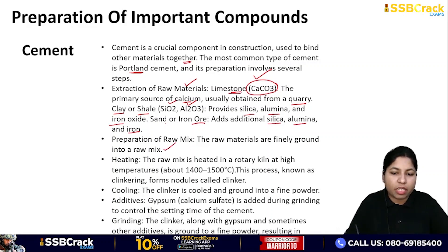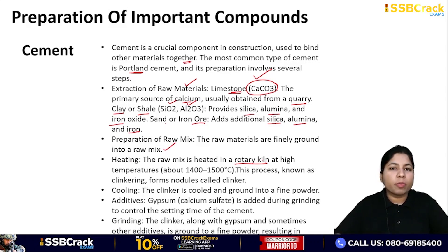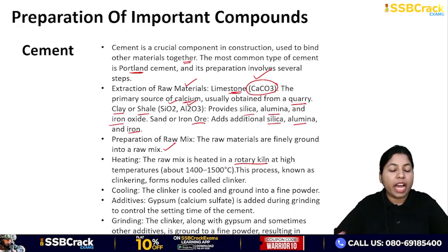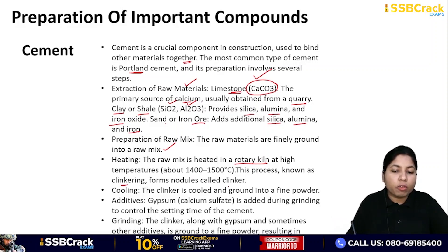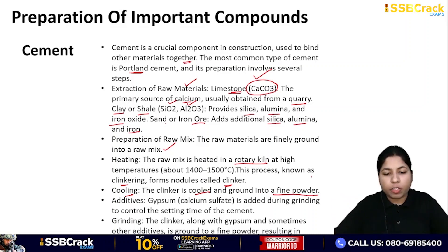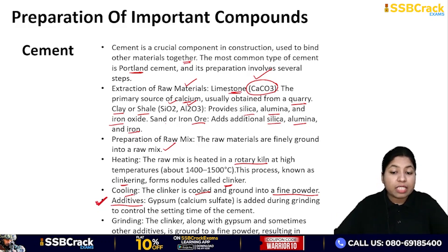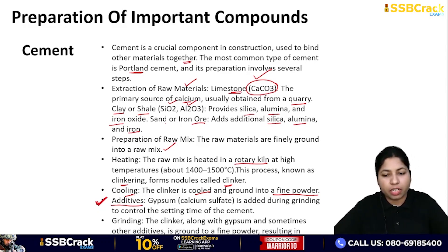All raw materials are mixed and finally ground into a raw mix. Then they are heated in a rotary kiln — similar to a brick kiln — at high temperature. This process is called clinkering, and the nodules formed are called clinker. After clinkering, the clinker is cooled and then ground into a fine powder. An important additive here is gypsum (calcium sulfate), which is added during grinding to control the setting time of cement.